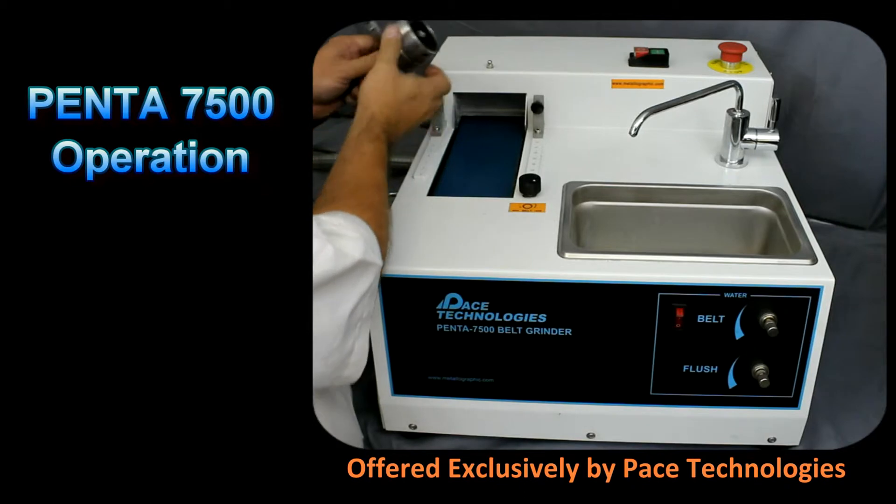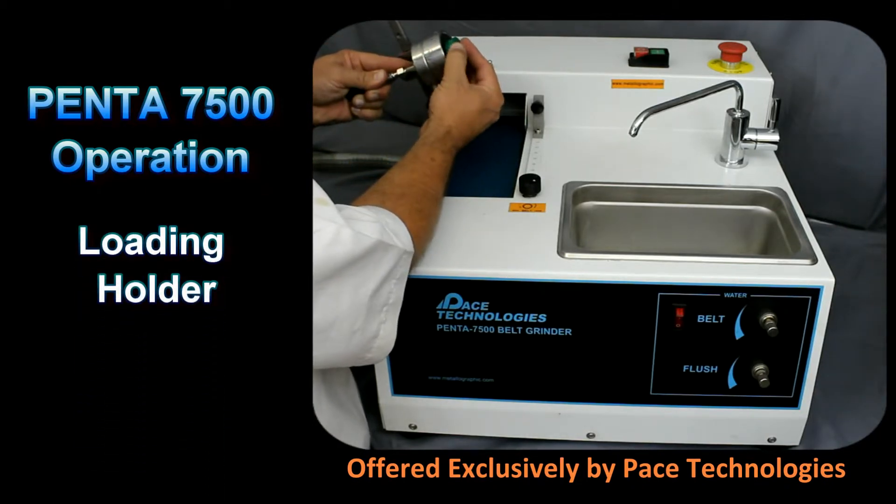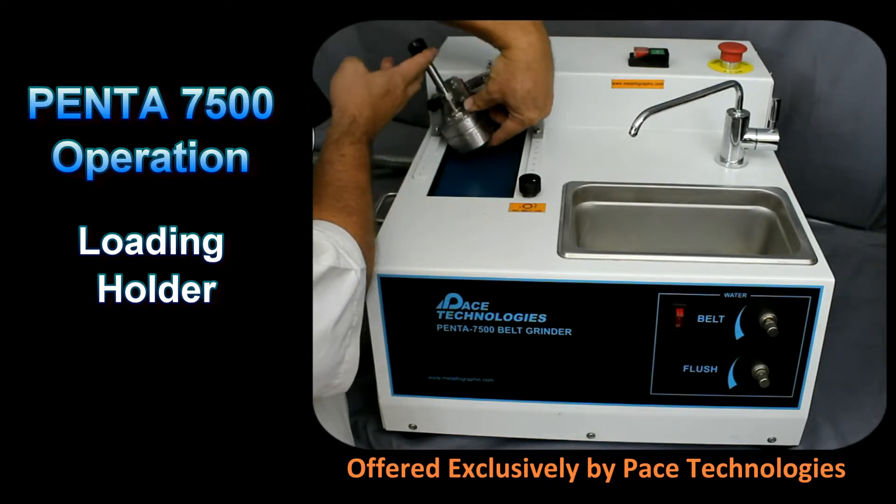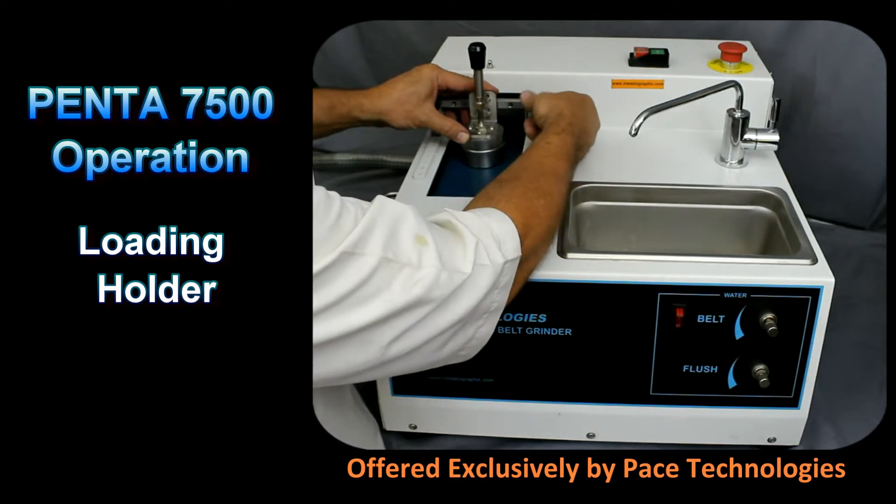Loading the mounted specimen in the fixture is very easy. Pull back on the spring and insert the mount into the holder. While holding the mount in place, swing the holder into position and then tighten the holding pin.